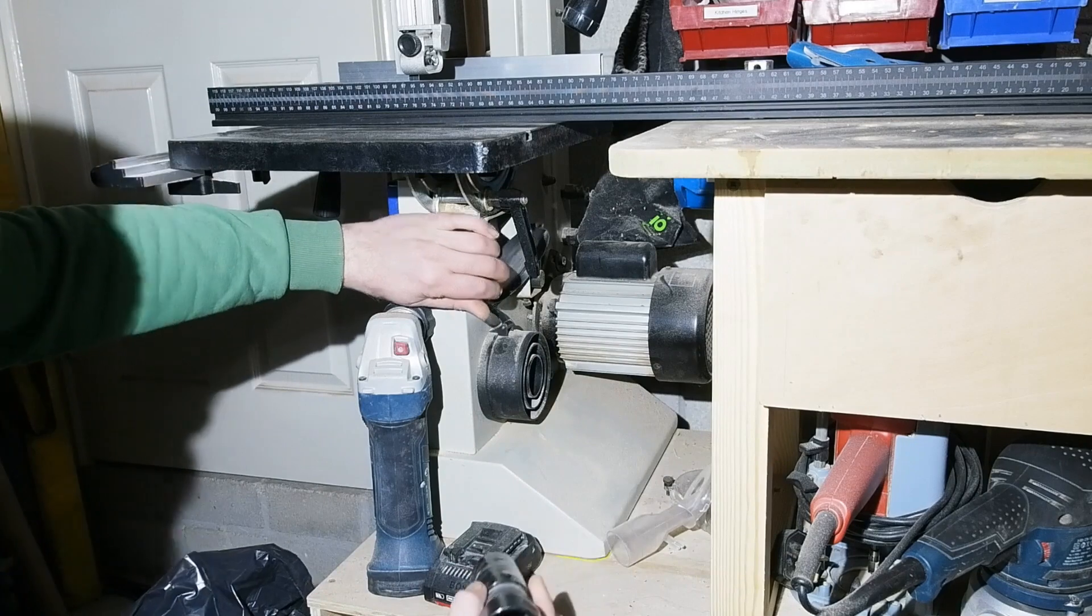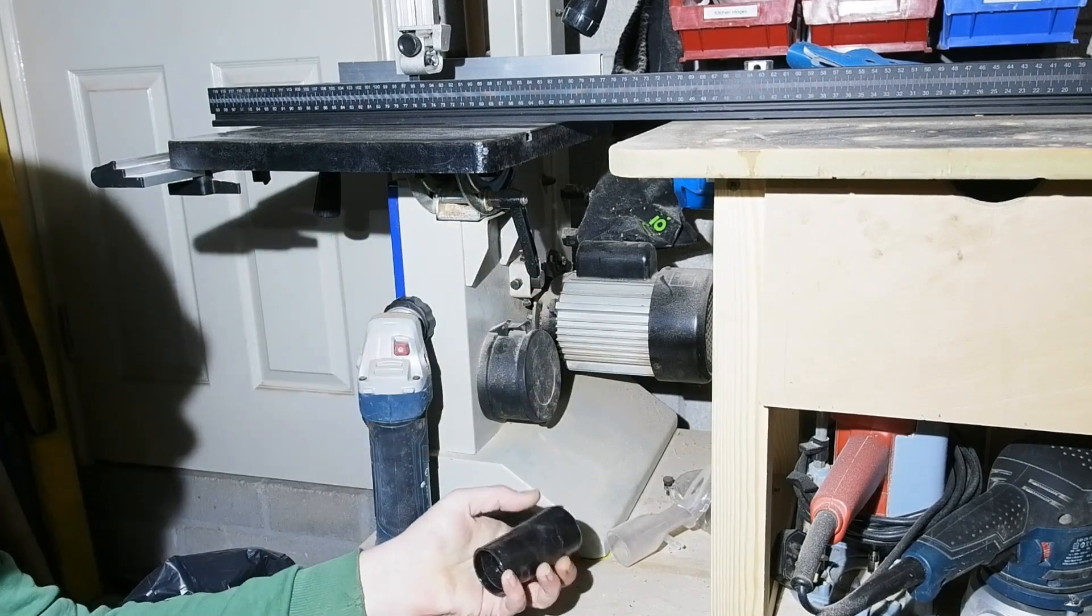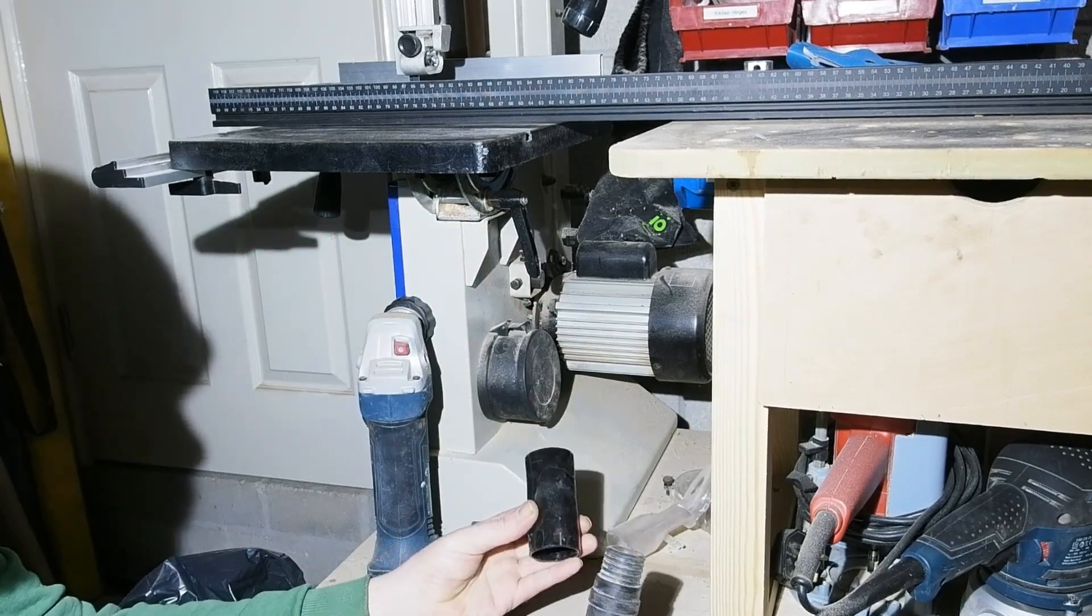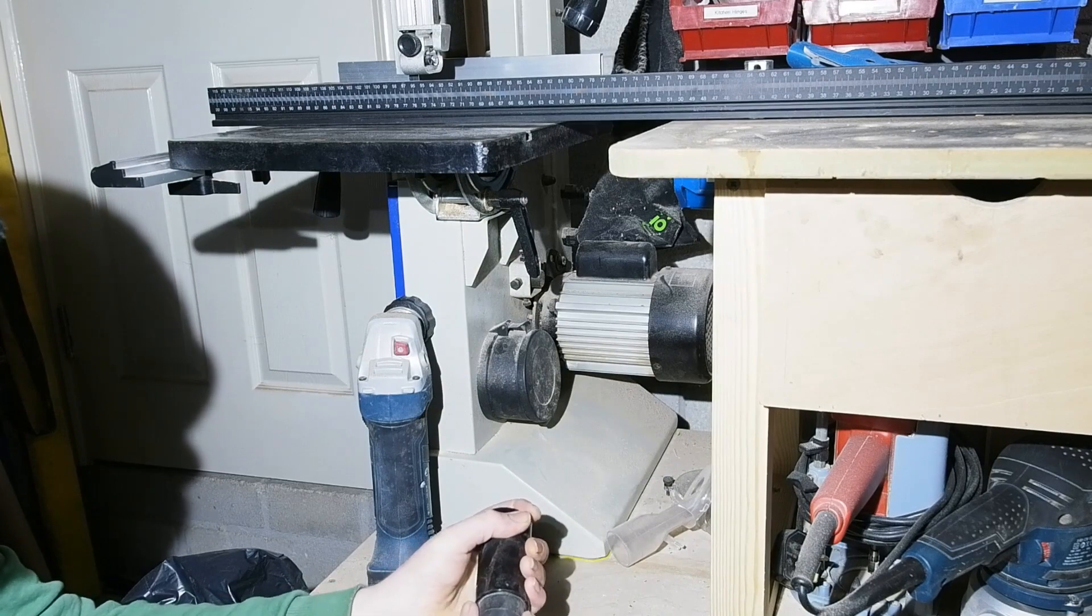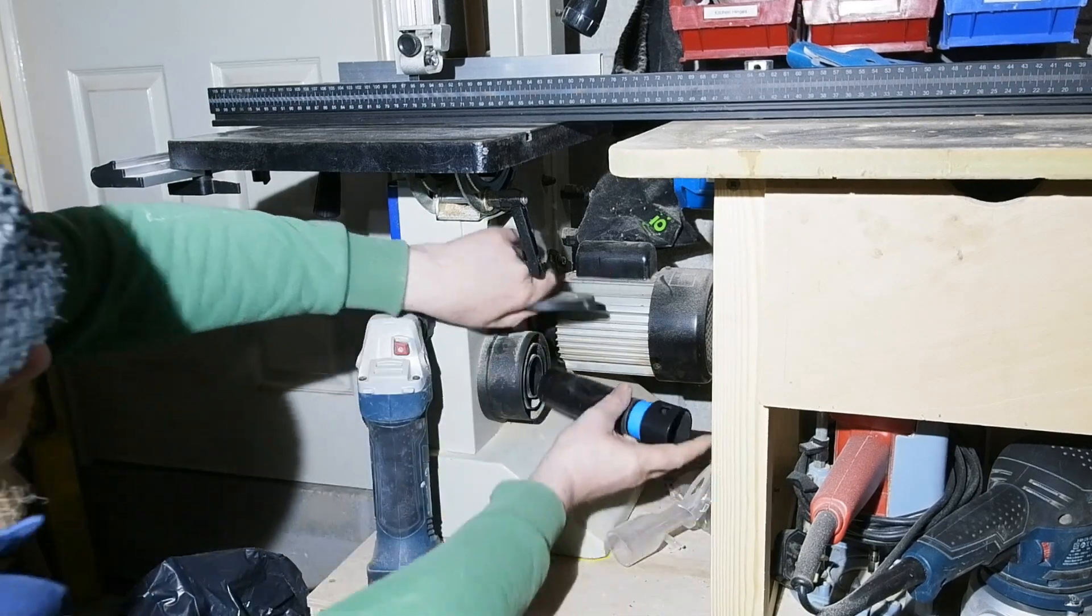Finally, in the bandsaw, I used a straight connector that was for the vac end of the Centec hose with the smallest Power Tool adapter and this, like on the table saw, now just lives here.